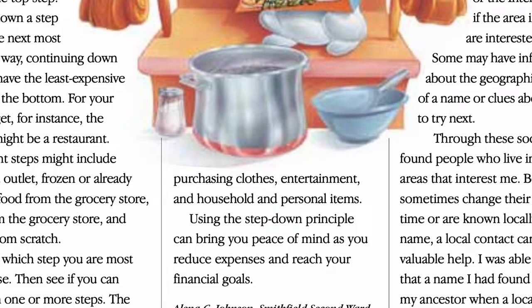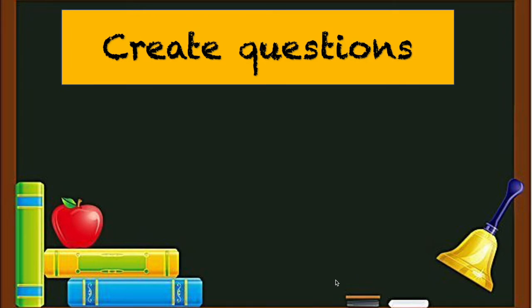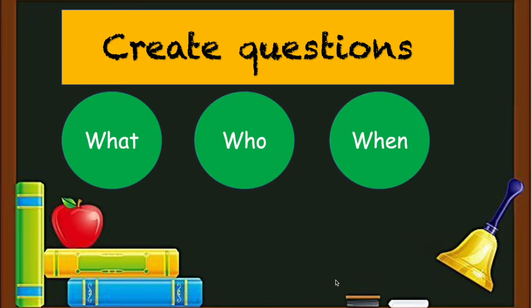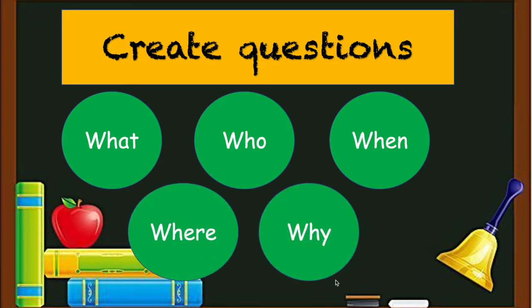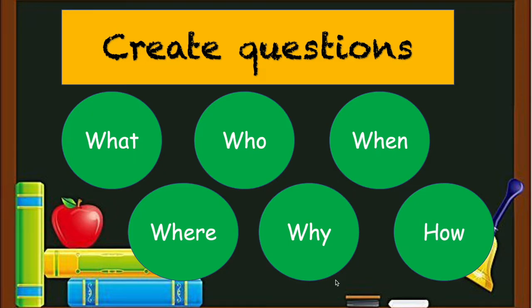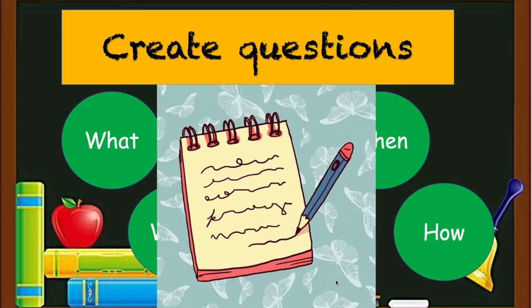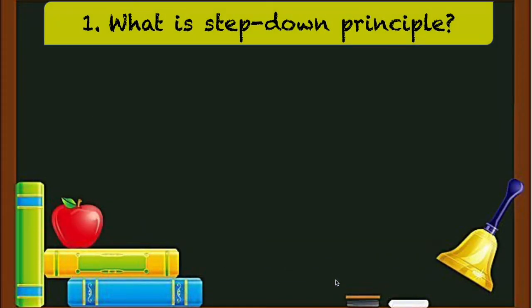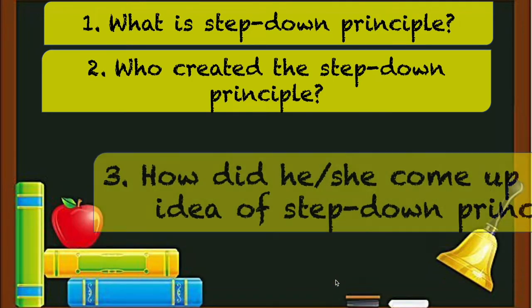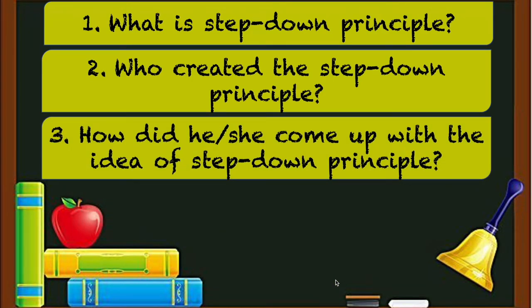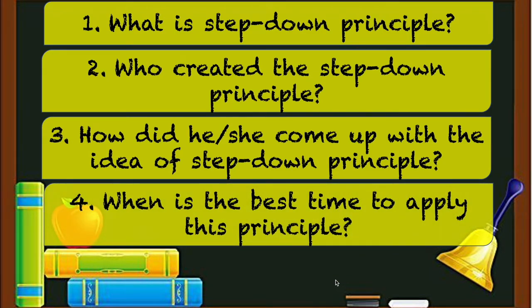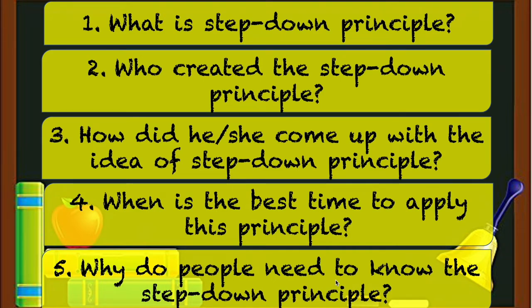Now that you have an idea what the text is about, it's time to create questions. These questions will guide you as you look for particular details. The guide questions are: what, who, when, where, why, and how. Write these questions in a separate sheet of paper for later review. Example questions are: What is the step down principle? Who created the step down principle? How did he or she come up with the idea? When is the best time to apply this principle? And why do people need to know the step down principle?